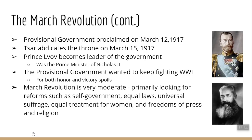On March 12, 1917, Tsar Nicholas the Second starts making arrangements to step down, and a provisional government is proclaimed. On March 15th, he abdicates his throne. Prince Lvov — Nicholas's prime minister — becomes the leader of this new government. Nicholas handpicked him to lead, because in reality Nicholas hoped he'd be able to come back after the war.